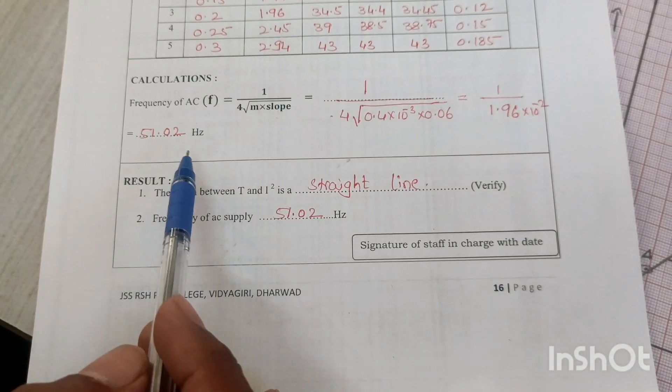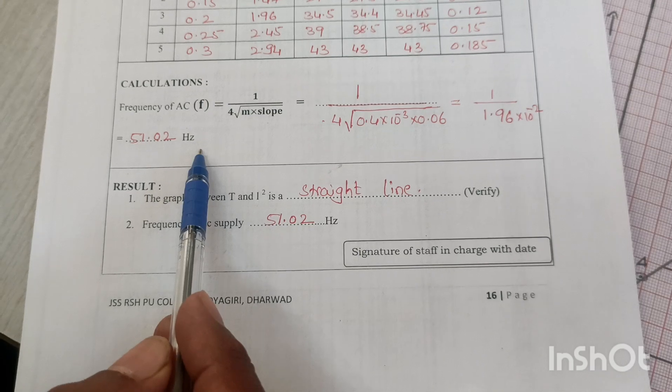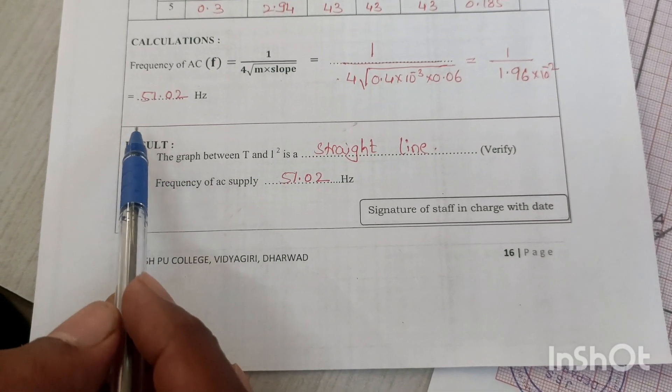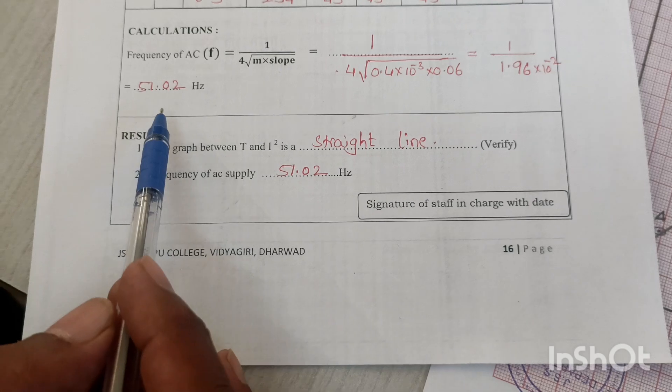This frequency of AC is almost similar to the standard value of 50 hertz.